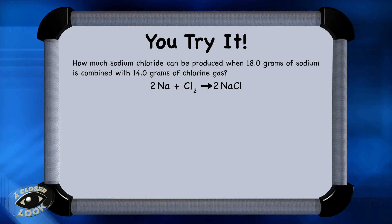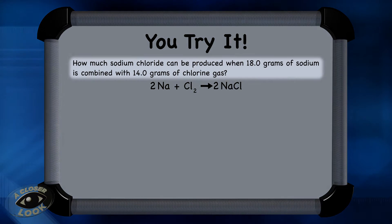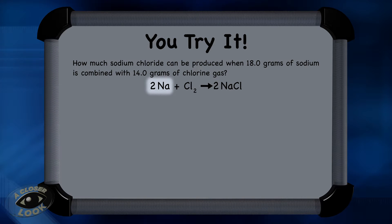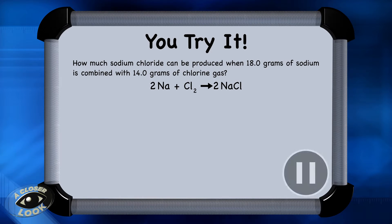Are you ready to try one on your own? Here's the problem: how much sodium chloride can be produced when 18.0 grams of sodium is combined with 14.0 grams of chlorine gas? Here is the balanced equation: two moles of sodium reacts with one mole of chlorine gas to produce two moles of sodium chloride. Press pause, try to work it out, and then press play to see if you got it right.